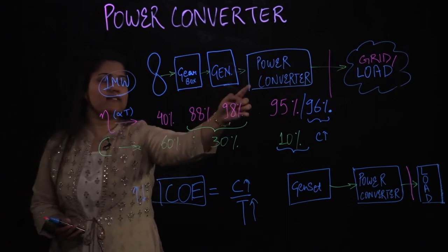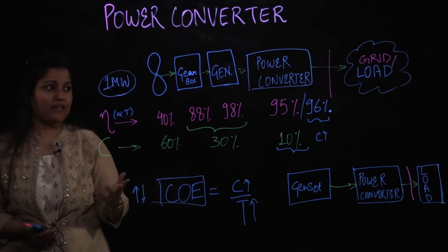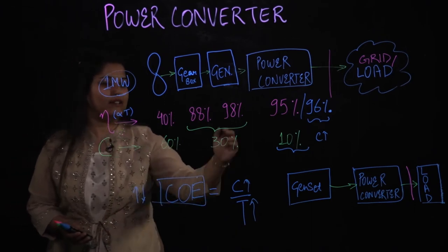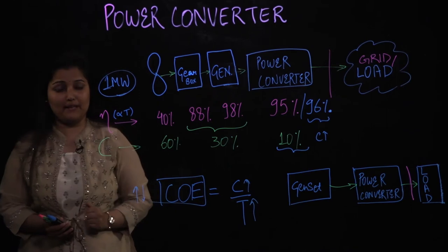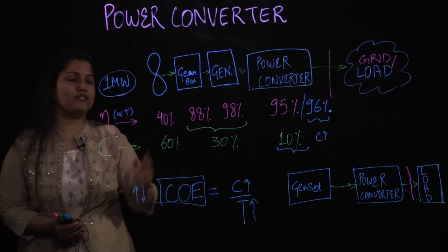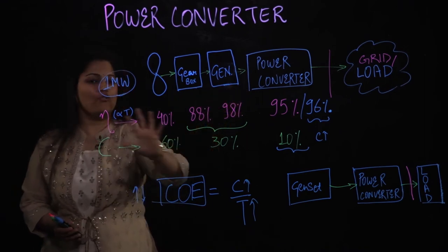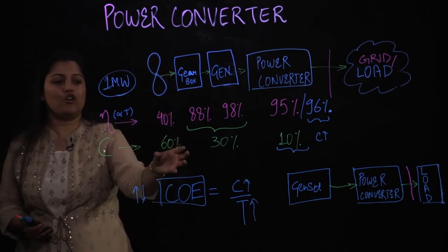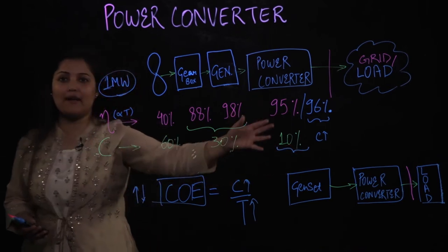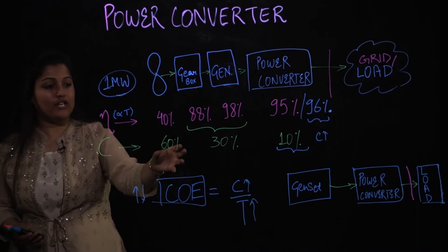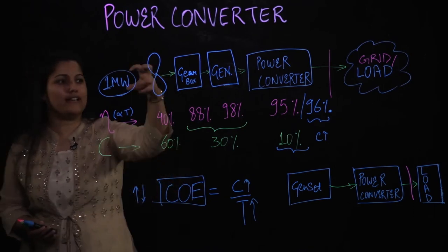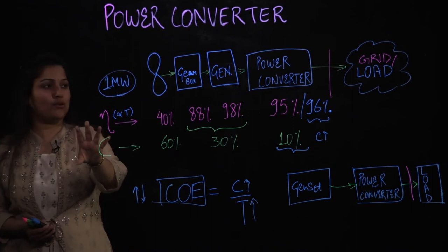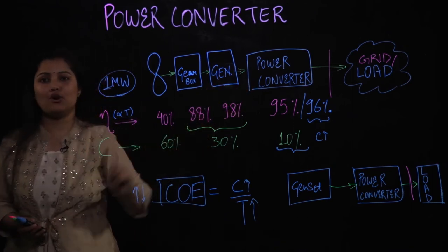Similarly, for a wind system when the power converter can operate at variable frequency — operating the entire system at variable speed — the efficiency becomes very high. It becomes even higher than 40% or 88% because with variable drives in the power converter the overall system efficiency can really go up. And even if your wind blade size is smaller, you can save a lot of cost. Adding a little more cost to the power converter, which is just 10% of your system cost, can reduce a lot of cost from the blade and tower perspective if you are getting more energy from the same wind.